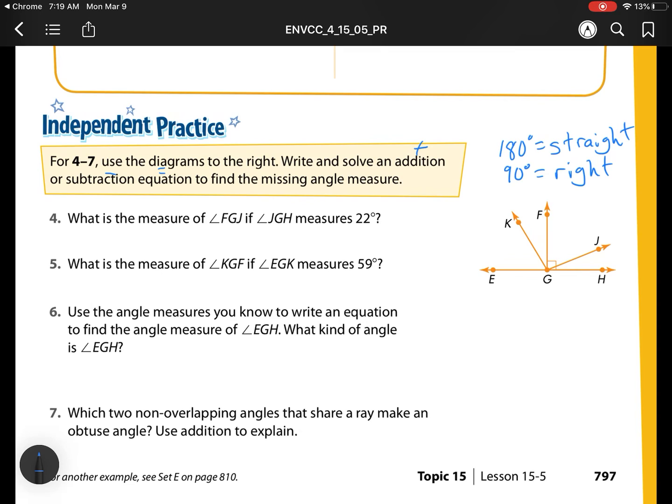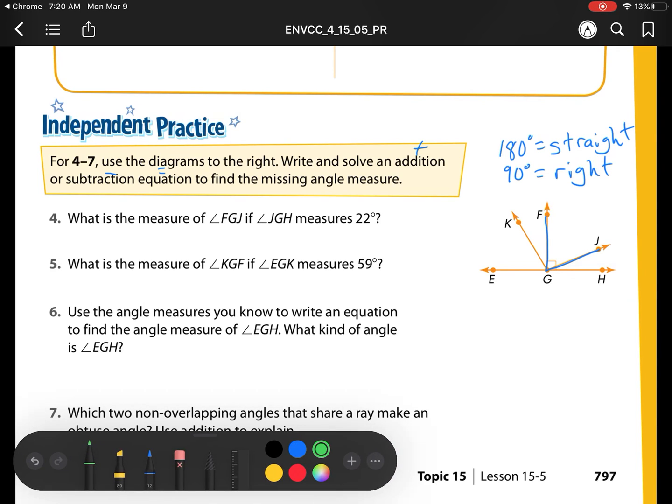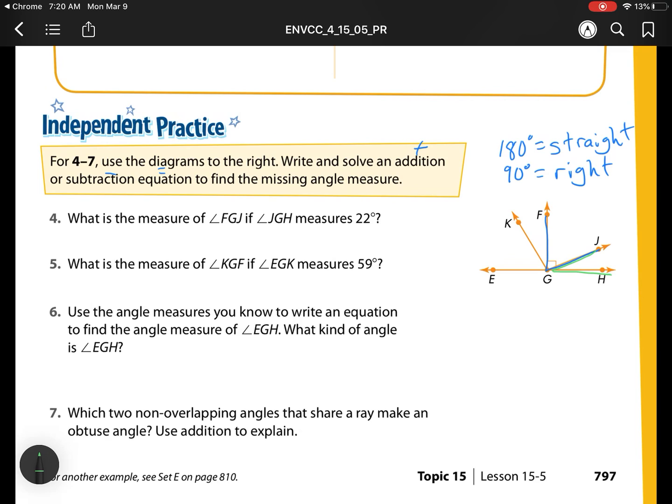So here we have, what's the measure of angle FGJ if JGH measures 22? Let's put that in a different color, JGH is 22. Well, I know that this is a right angle, so I have 90, take away that 22 piece. What am I left with? 90 take away 22 is 68 degrees. So my equation is 90 minus 22 equals 68 degrees.